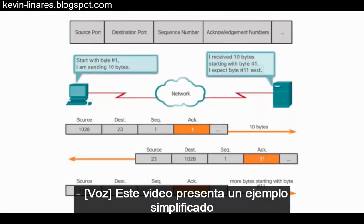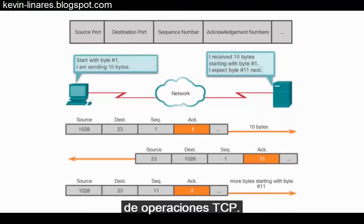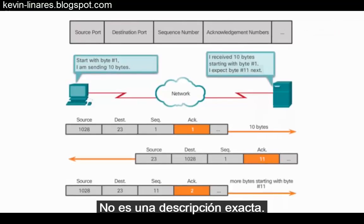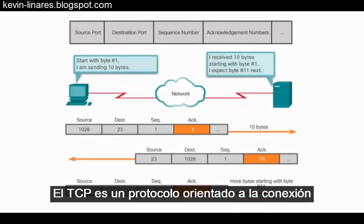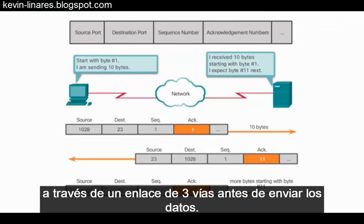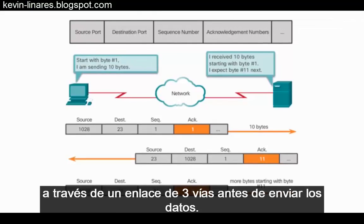This video depicts a simplified example of TCP operations and is not necessarily a realistic depiction. TCP is a connection-oriented protocol in that a connection is established first using a three-way handshake before data is sent.